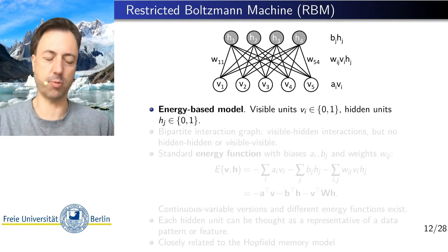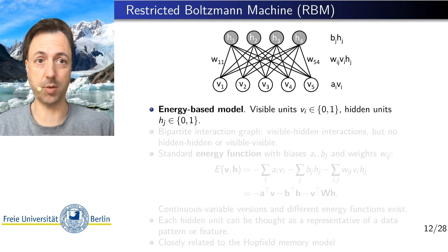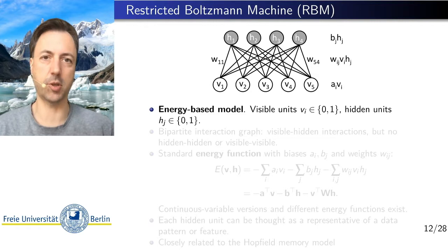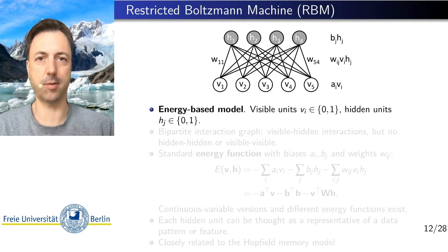In generative machine learning we have the following task. We are given data by examples — for example, images from a certain image database — and we want to learn the probability distribution underlying those data points, then have a model that can sample from it and generate new images. The goal is to generalize, not just memorize individual samples by heart.